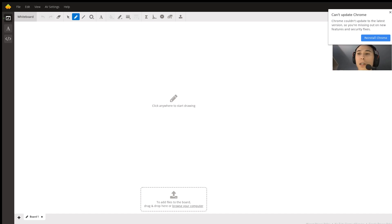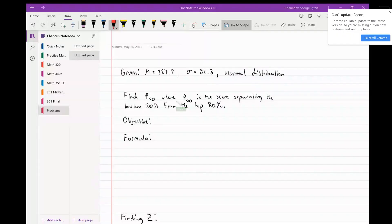I'm going to share my screen so we can work this problem out. We are given the mean, or mu, which is 227.2, and the standard deviation, or sigma, which is 82.3.